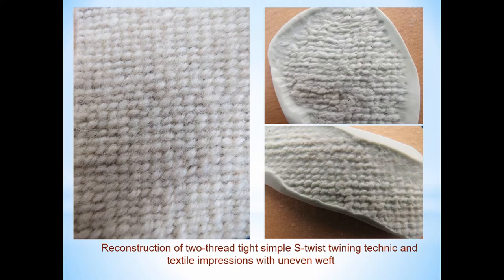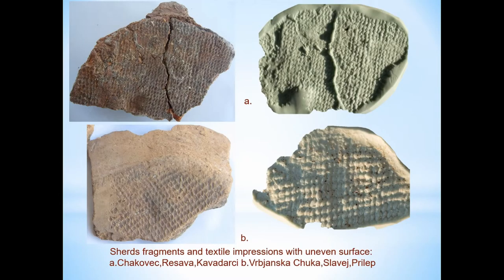On several specimens an uneven weft can be observed. Although this may be a result of uneven spinning, it could also be a result of more or less tension during weaving. On my first attempt to reconstruct the twining structure you can see thicker and thinner parts of the weft. This confirms that the quality and appearance of the fabric depends also on the skills and performance of the one who produced it. One more reason for uneven weft appearance can be seen on the fragments.